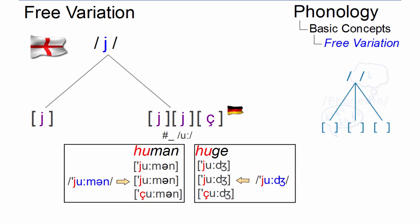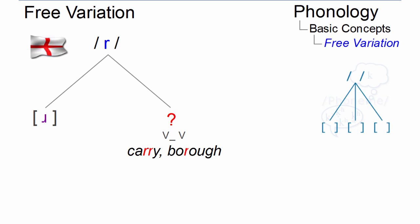Another example can be found in British English where the R between two vowels can be realized in two ways. We normally use the alveolar approximant as in carry or borrow.